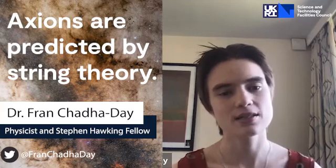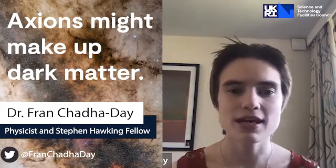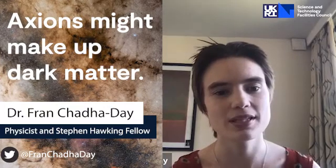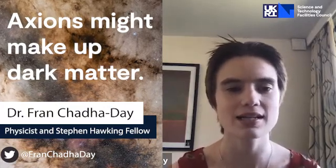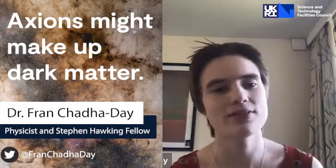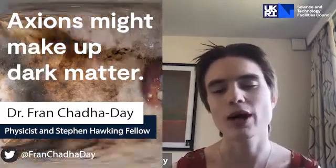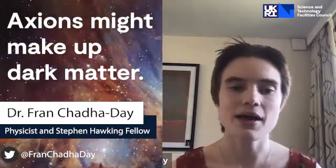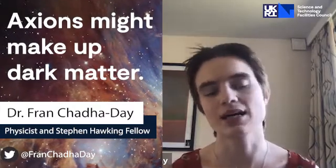And secondly, axions might make up dark matter. This is a mysterious kind of matter that we know exists because we can see its gravitational pull on stars and galaxies, but so far it hasn't been detected in any other way, and this means that we don't know what it is, what kind of particle makes it up. And it turns out that axions have all the right properties to be dark matter.